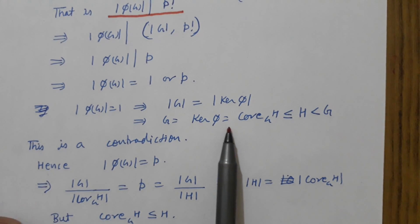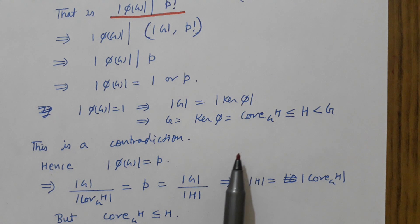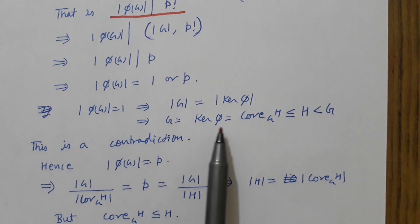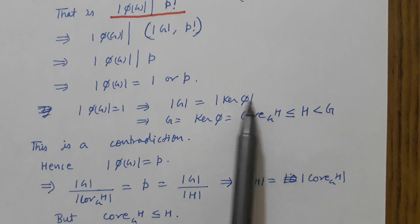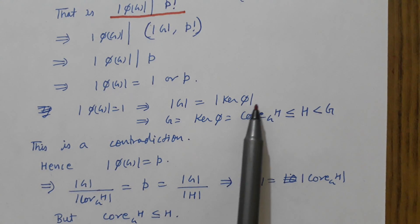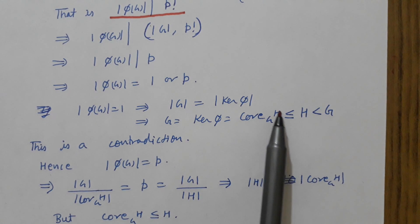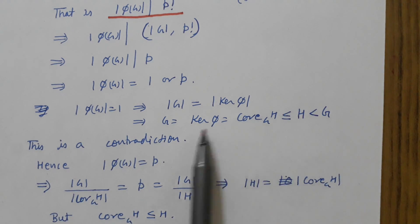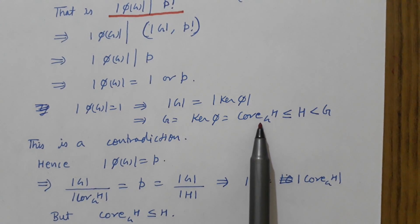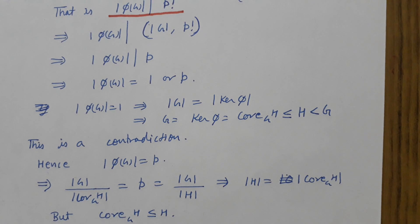If |φ(G)| = 1, then since |φ(G)| = |G|/|ker(φ)|, we get |G| = |ker(φ)|, so G = ker(φ) = core(H in G). But core(H in G) is the largest normal subgroup of G contained in H, so core(H in G) can be at most a subgroup of H. However H is a proper subgroup of G since its index is p — a contradiction. Therefore |φ(G)| cannot be 1.